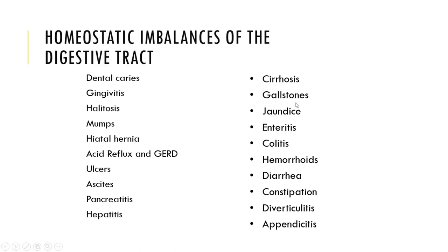Gallstones are essentially concentrated cholesterol derivatives in our bile. If these get so large that they block the bile ducts, they could actually damage the walls of the gallbladder. Jaundice is the accumulation of bilirubin in the skin as a result of some sort of blockage or liver disease.